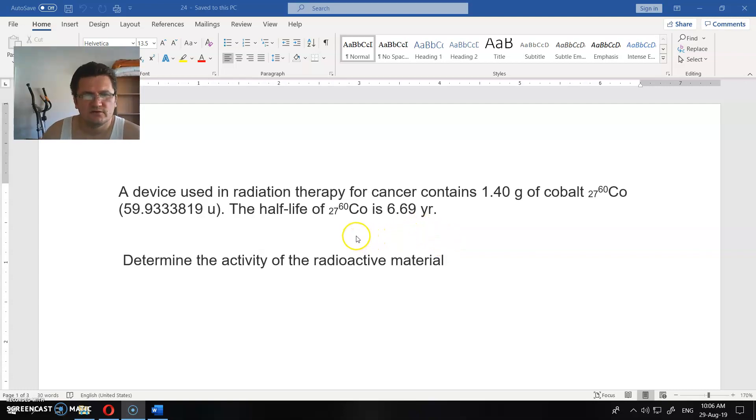A device used in radiation therapy for cancer contains 1.4 grams of Cobalt-60. The half-life of Cobalt-60 is 6.69 years. Determine the activity of the radioactive material.